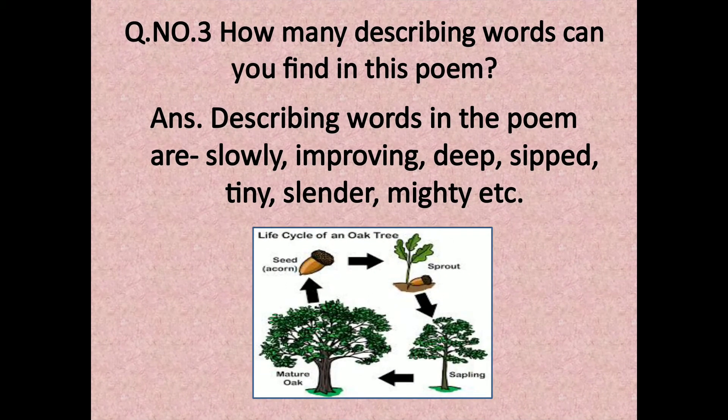Question number 3: How many describing words can you find in this poem? We have already discussed describing words in our previous classes. The describing words in the poem are: slowly, improving, deep, sip, tiny, slender, mighty, etc.